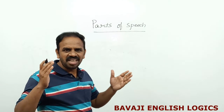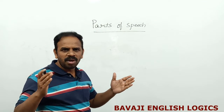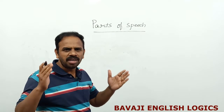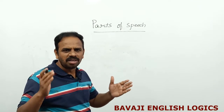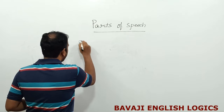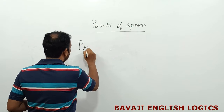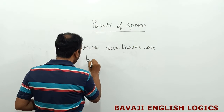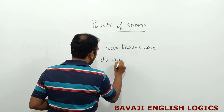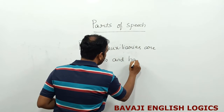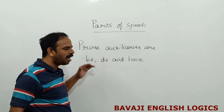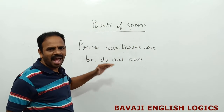Now we shall see what are prime auxiliaries, what are auxiliaries, and what are modal auxiliary verbs. Let us see what are prime auxiliaries. Prime auxiliaries are be, do, and have.